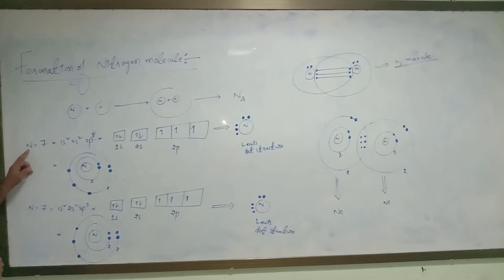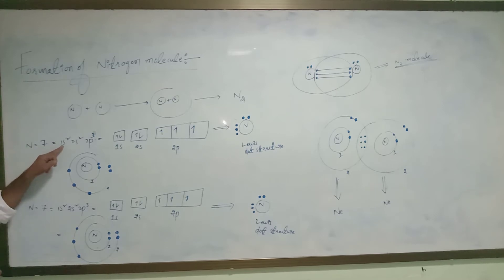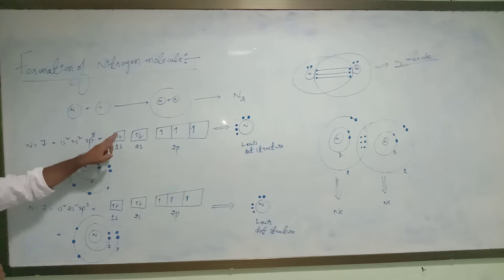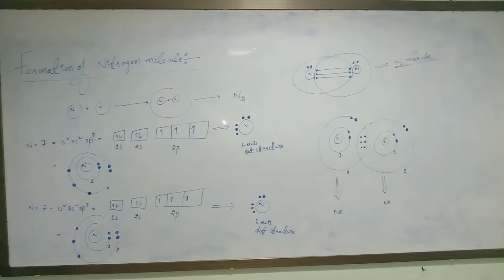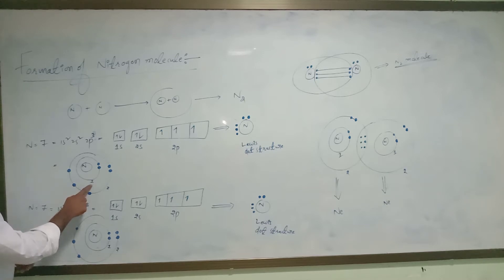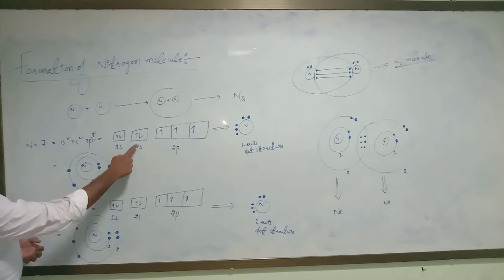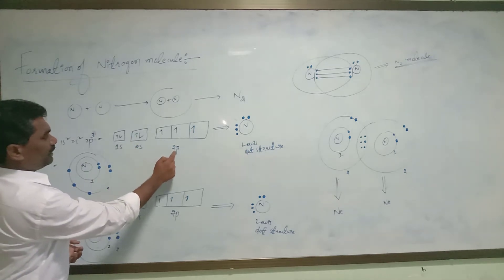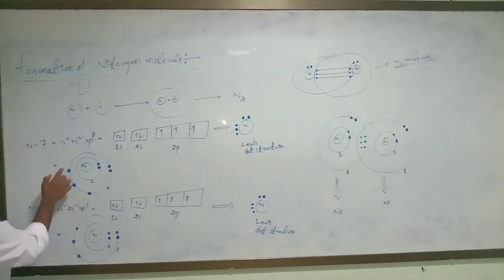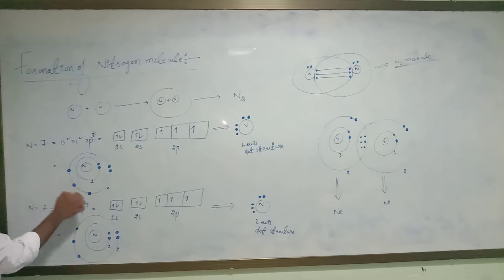The atomic number of nitrogen is 7. The electronic configuration is 1s², 2s², 2p³. In the first orbit, two electrons are filled. In the second orbit, two electrons are filled in the s orbital, and in the p orbital, three electrons are filled. So three electrons are here.